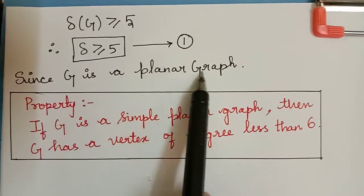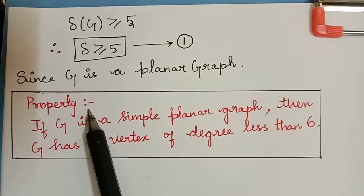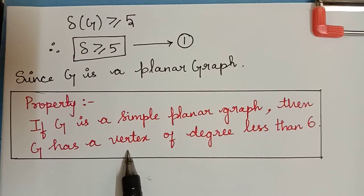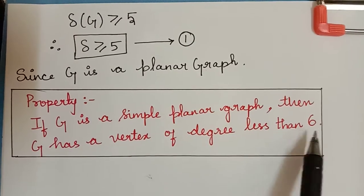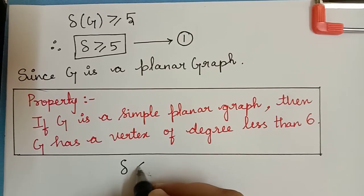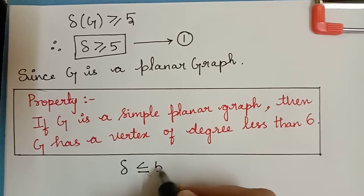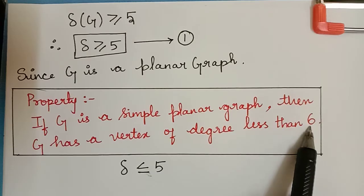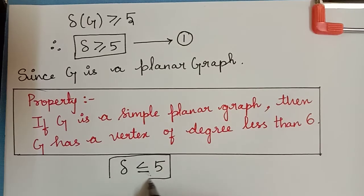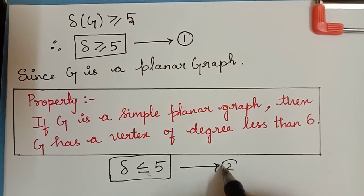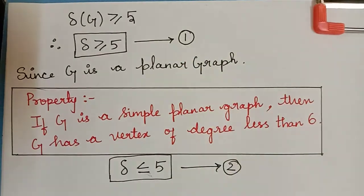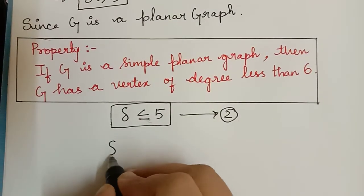Since G is a planar graph, there is a property which says that if G is a simple planar graph then G has a vertex of degree less than 6. Therefore delta(G) is less than or equal to 5. Let us mark this as equation 2. From equation 1 and equation 2, we obtain that delta equals 5.